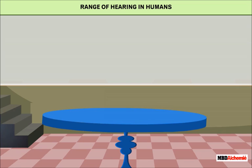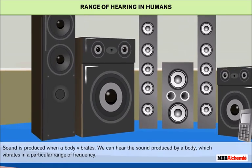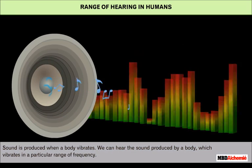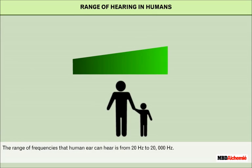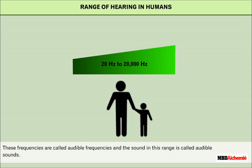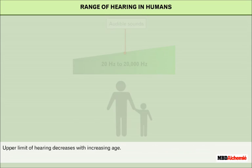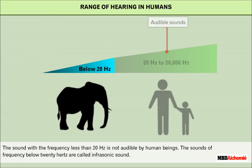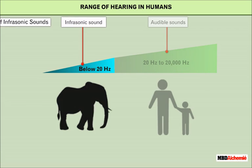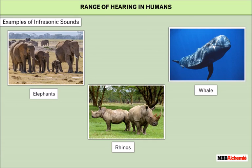Sound is produced when a body vibrates. We can hear the sound produced by a body which vibrates in a particular range of frequency. The range of frequencies that the human ear can hear is from 20 Hz to 20,000 Hz. These frequencies are called audible frequencies and the sound in this range is called audible sounds. The upper limit of hearing decreases with increasing age. The sound with frequency less than 20 Hz is not audible by human beings. Sounds of frequency below 20 Hz are called infrasonic sound. Animals like elephants, whales, and rhinos can hear these sounds.